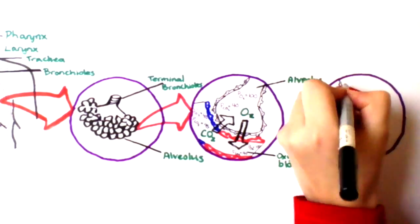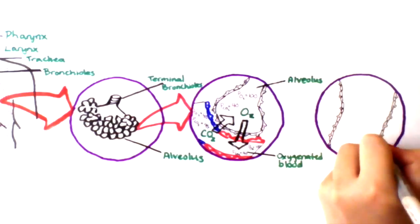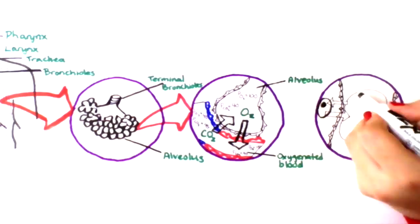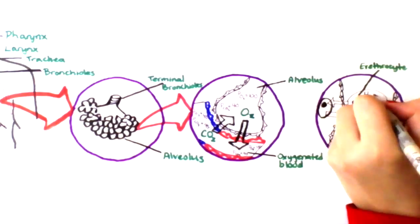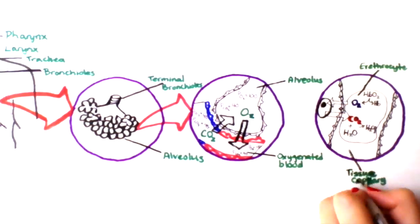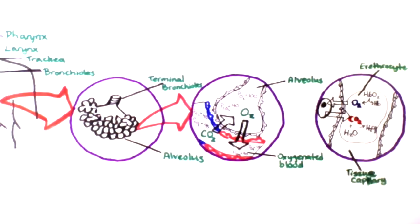Gas exchange in the tissues also occurs by simple diffusion. Hemoglobin, which is a protein inside red blood cells or erythrocytes, carries oxygen to the tissues. Once oxygen arrives, it moves down its concentration gradient into the cell, and the accumulated carbon dioxide within the cell moves down its concentration gradient into the red blood cell.